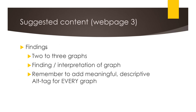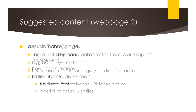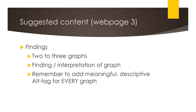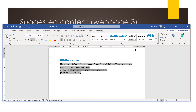For web page 3, make this your findings page. Put your two to three graphs here along with a finding and interpretation of each graph. You must add a meaningful, descriptive alt tag for every single graph as well as the image on the home page. If an alt tag is missing or not descriptive, you lose the mark for alt tags. Remember, the purpose of an alt tag is so that a screen reader can read a description for someone with a visual impairment — it has to actually tell them what the graph is about, for example, 'graph representing male versus female' and so on.